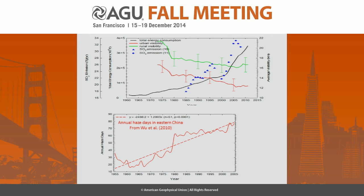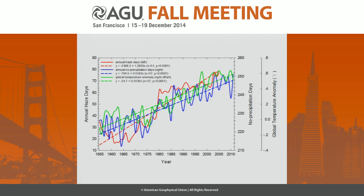Consistent with that are two profiles of visibility measurements — one for rural stations in eastern China and one for urban stations. Again, the large drop in visibility happened where haze days surged, which is inconsistent with total energy consumption. In comparison, the change of haze days with increasing dry days shown in blue shows better consistency, with the red being the global temperature anomaly.